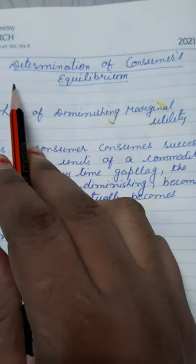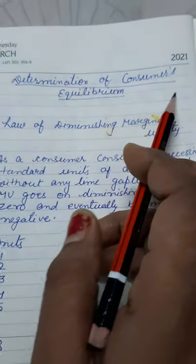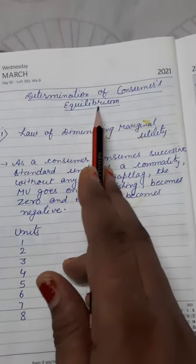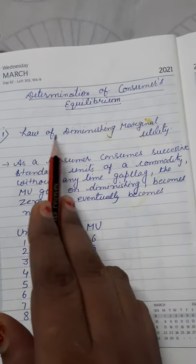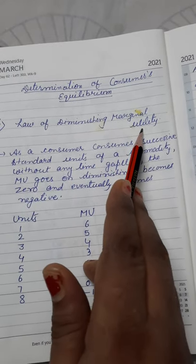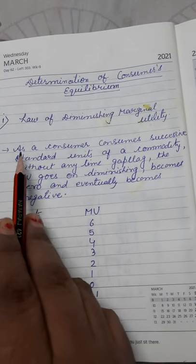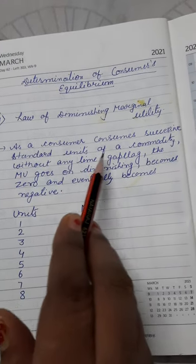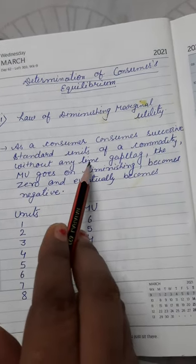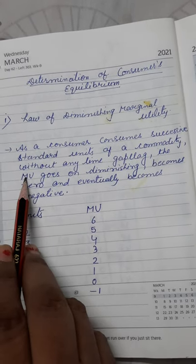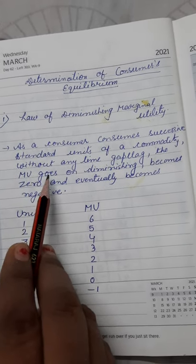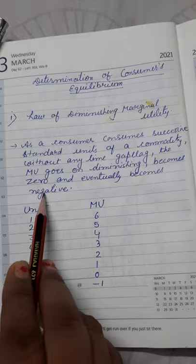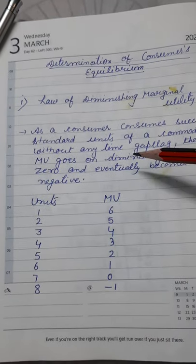Good morning girls. Today we will discuss determination of consumer's equilibrium as I have stated earlier. The first point before elaborating this theory, there is a law of diminishing marginal utility. I have explained it earlier. Again I am explaining the thing. As a consumer consumes successive standard units of a commodity without any time gap lag, the marginal utility goes on diminishing.